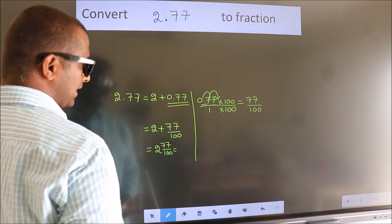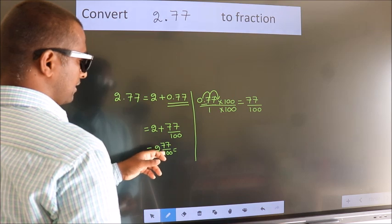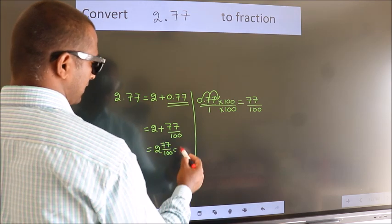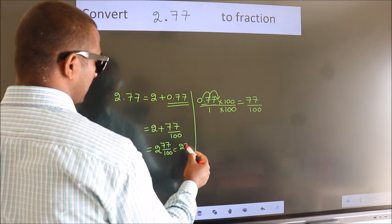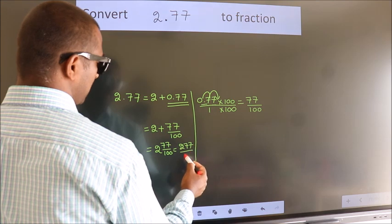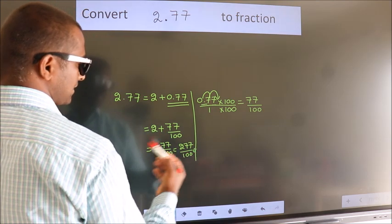In improper fraction it is 2 into 100, which is 200 plus 77. 277 by 100 is our fraction.